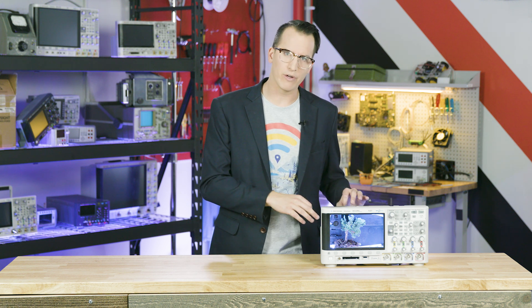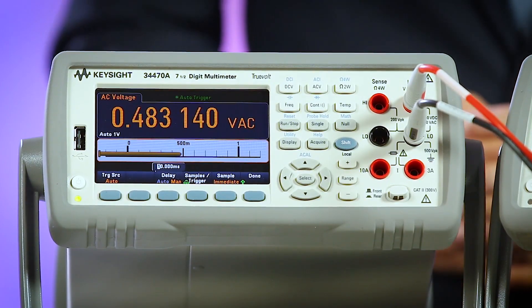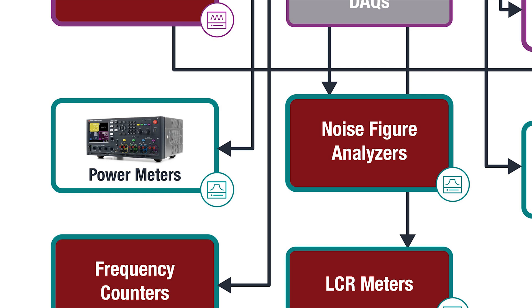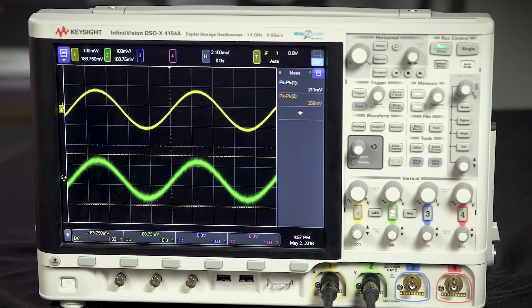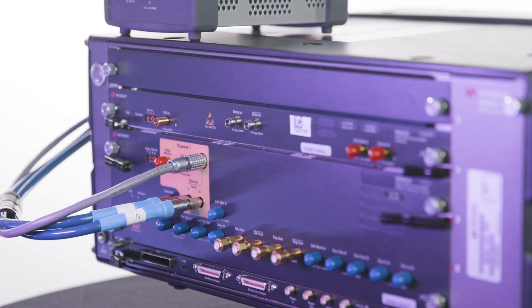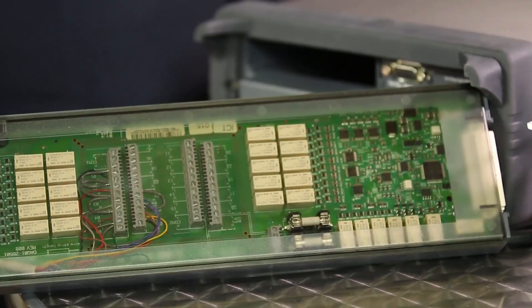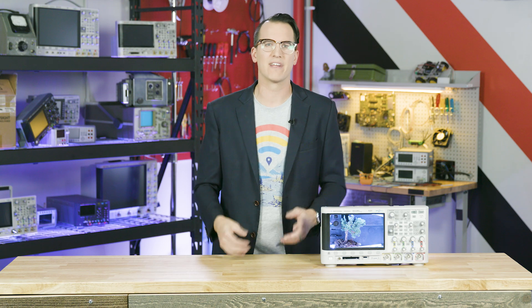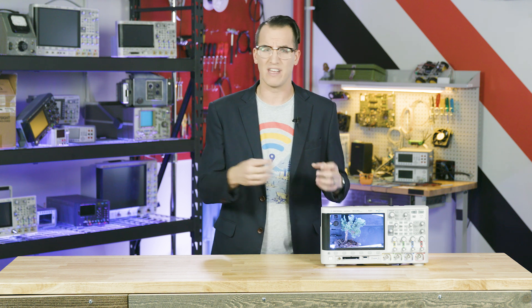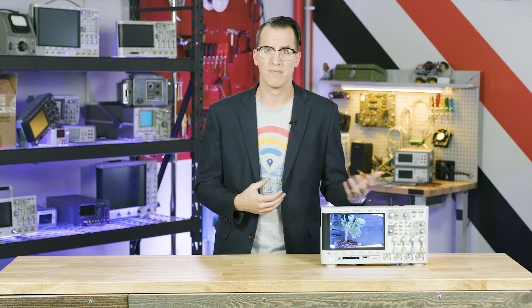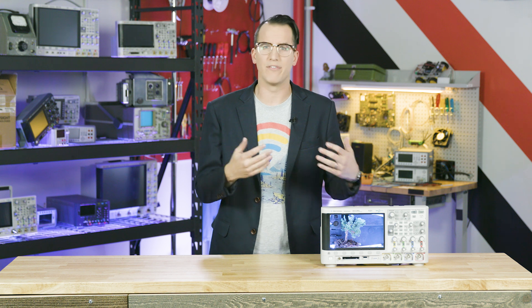Starting at low frequencies, we have input-based gear that's all time-domain-flavored — things like DMMs, pico-ammeters, curve tracers, and power analyzers. A DMM gives you a pretty basic but very precise measurement, while a power analyzer gives you a deep dive into your device's power behaviors. As you bump up in frequency, you run into test gear mainly used for digital systems: tools like oscilloscopes, digitizers, logic and protocol analyzers, and bit error ratio testers, or BERTs. A logic analyzer only gives you a one or a zero, a BERT analyzes those ones and zeros, and an oscilloscope gives you a complex waveform. Across all of these, the key specs are input quality and input quantity.